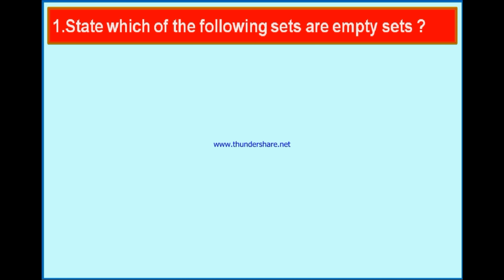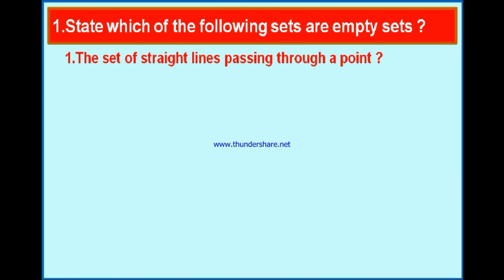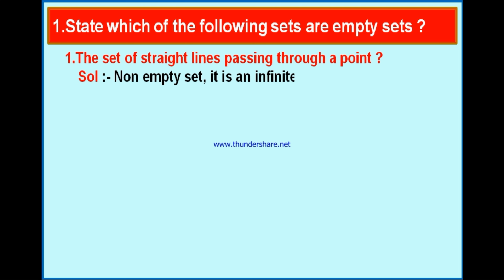The first question: state which of the following sets are empty sets. Bit 1: the set of straight lines passing through a point. If you take a point, you can draw infinite number of lines passing through it — one line, second, third, fourth, fifth, and so on. Therefore, since there are infinite elements in this set, it is not an empty set. It is a non-empty, infinite set.